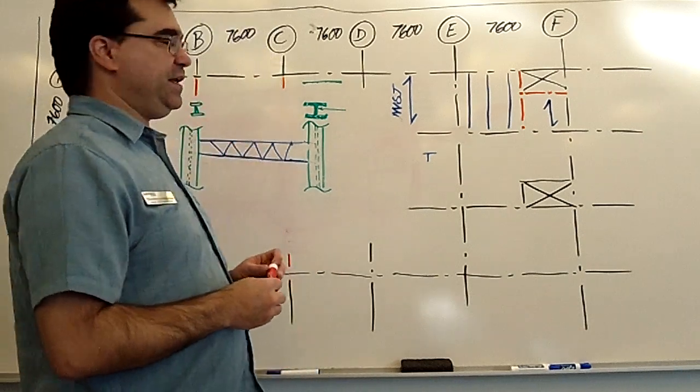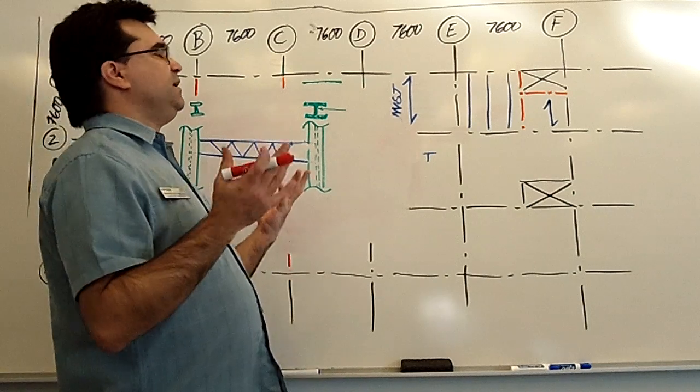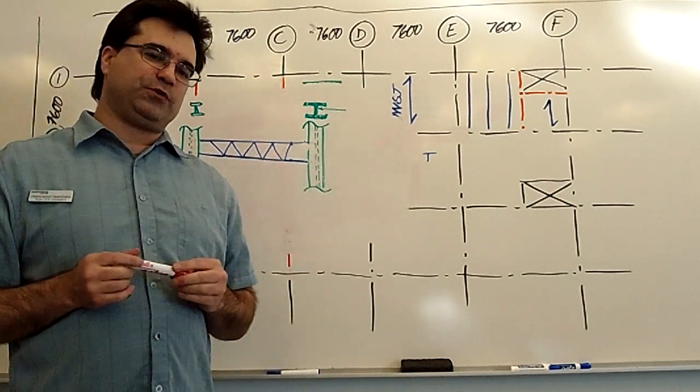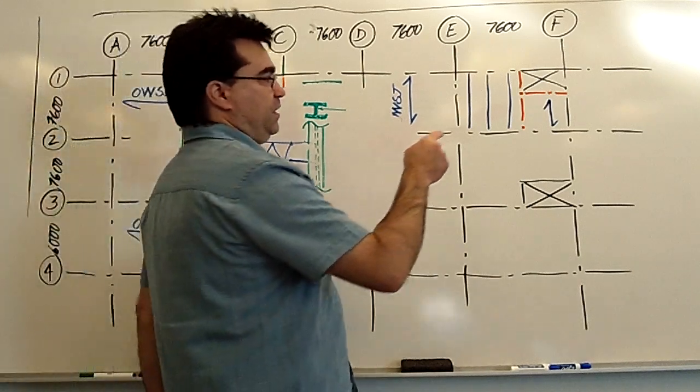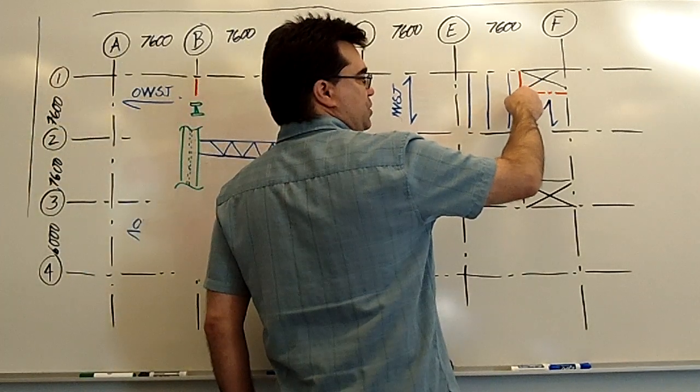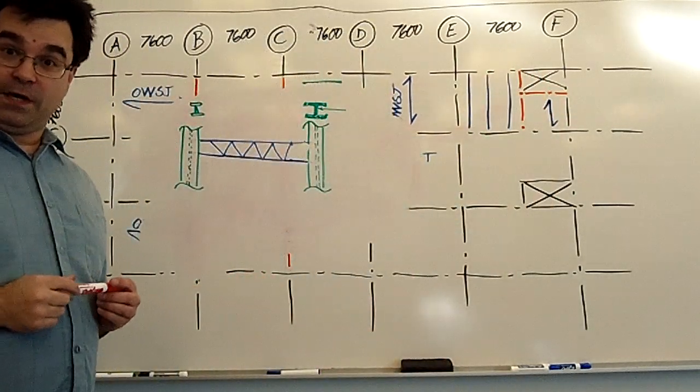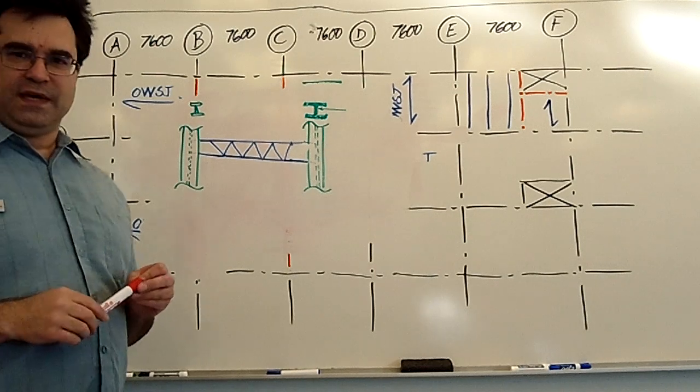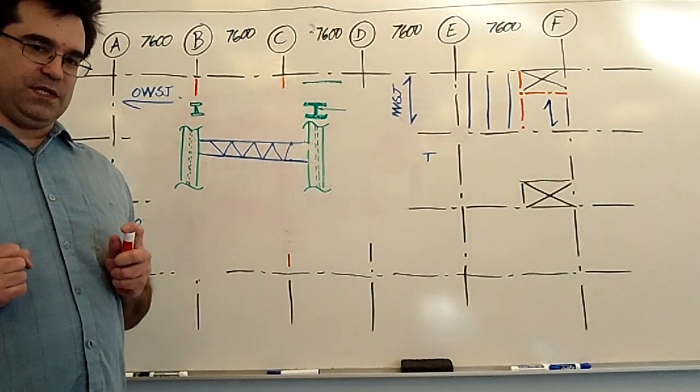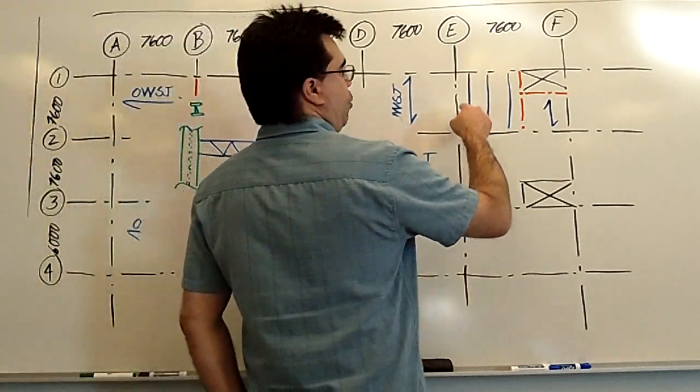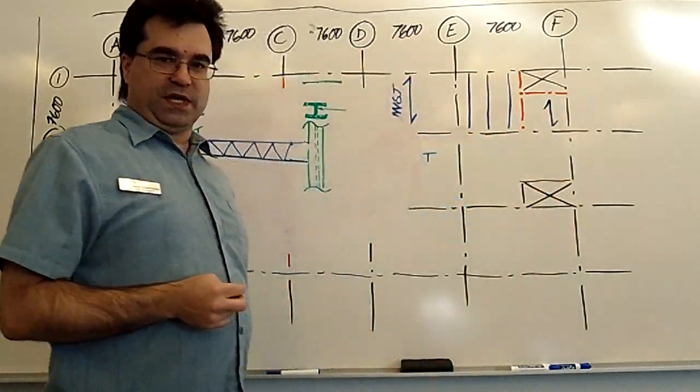Similarly, you have to look at these connections here between this W section and that W section. So that has to be done carefully, I guess if you're being asked to do that by your working drawings professor. But that would be my recommendation. Open web steel joists everywhere except here and here where you make W sections.